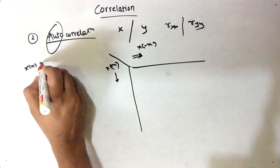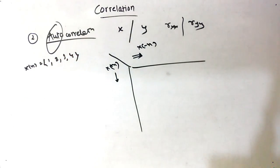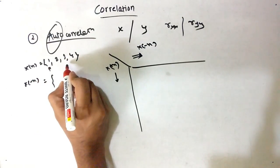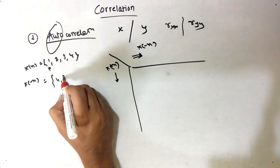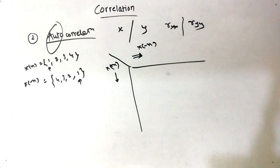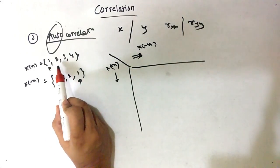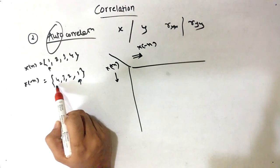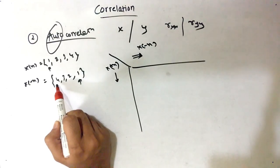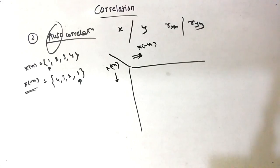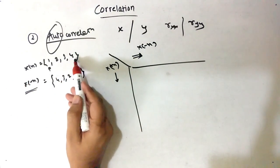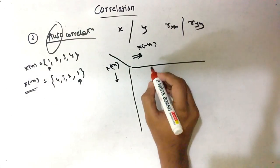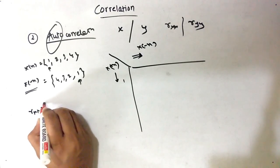Suppose we have X(n) and its values are 1, 2, 3, 4. Then what is X(-n)? If it starts at 0, all the positive side values become the negative side: 4, 3, 2, 1. So X(3) was 4, therefore X(-3) will be 4. It is always the mirror — if 4 is the last value on the positive side, it will be the first on the negative side.